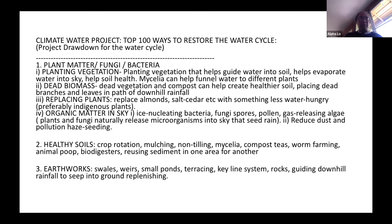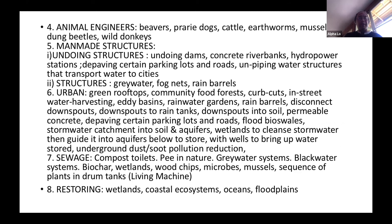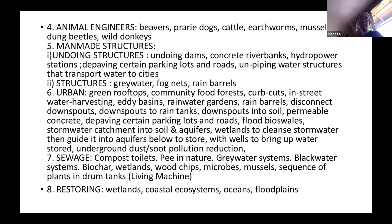There are many earthworks techniques from swales, weirs, small ponds, terracing, keyline systems, and rocks to guide downhill rainfall into the ground. Animal engineers also play a role: beavers and prairie dogs loosen soil, cattle help push vegetation into soil and increase absorbency, earthworms, mussels that clean water systems, dung beetles, and wild donkeys all contribute. On the manmade structures side, we want to undo some structures — removing dams to let water flow into floodplains, taking down concrete riverbanks, and depaving parking lots and roads. We should also unpipe water infrastructure that transports water to cities and instead help cities create their own small water cycles.